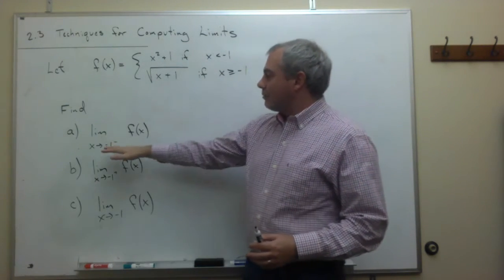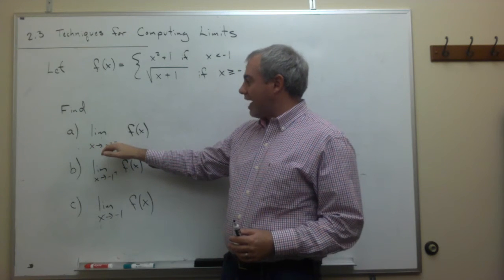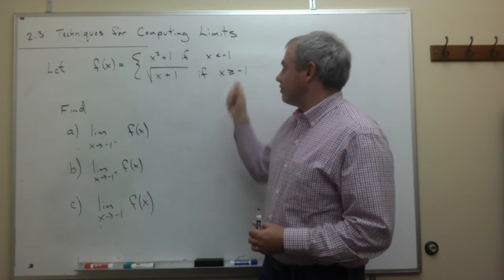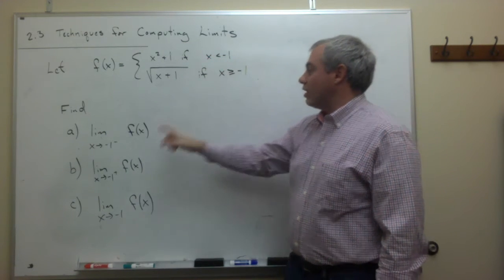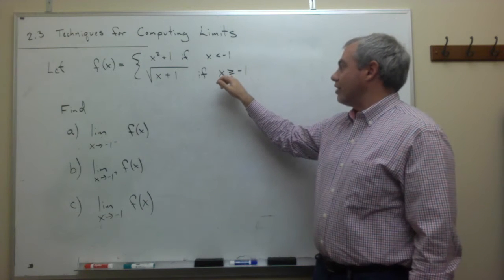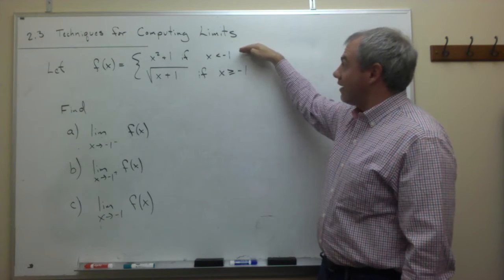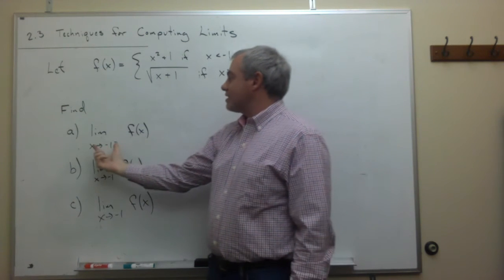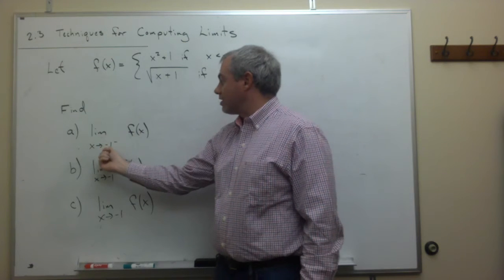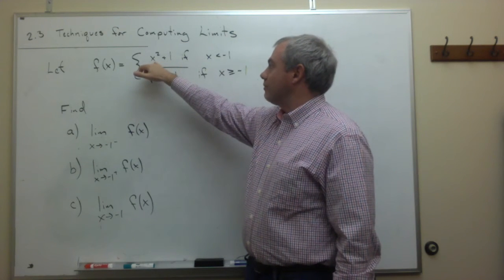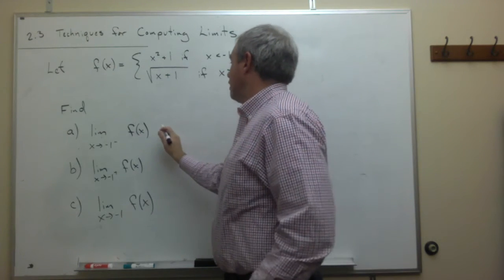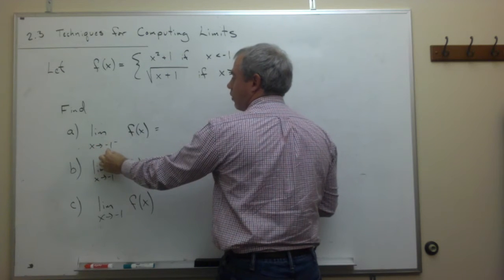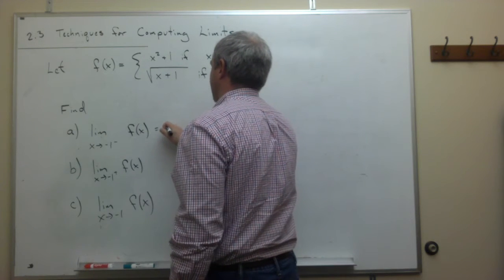For part a, if I'm coming at x equals minus 1 from the left — the negative side — I ask which of these two pieces I should use. From the left, x is less than minus 1, so I use x squared plus 1. Since that's a polynomial, I can just plug in minus 1 and get the limit value of 2.